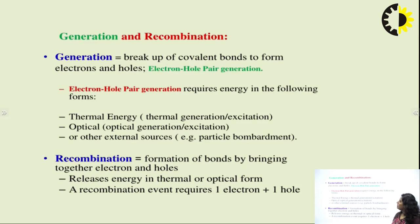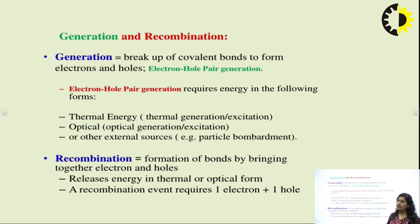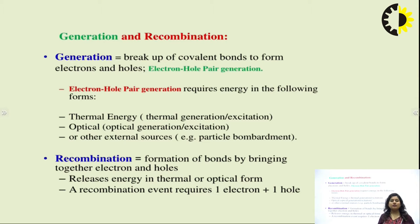In the generation process, electron and hole pair generation or breakup of covalent bonds gives a pair of electrons and holes. This phenomenon occurs in the case of the detector, where we require electrical energy in the receiver. In the detector, light falls on the detector and creates electron hole pair, and the output we get is in the form of electrical energy.